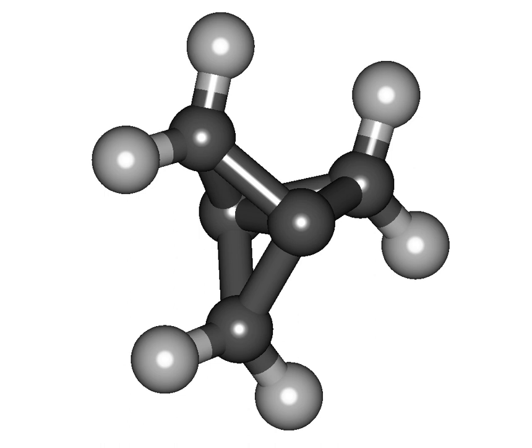Cyclopropane, C3H6. The C-C-C bond angles are 60 degrees whereas tetrahedral 109.5 degrees bond angles are expected. The intense angle strain leads to nonlinear orbital overlap of its sp3 orbitals.